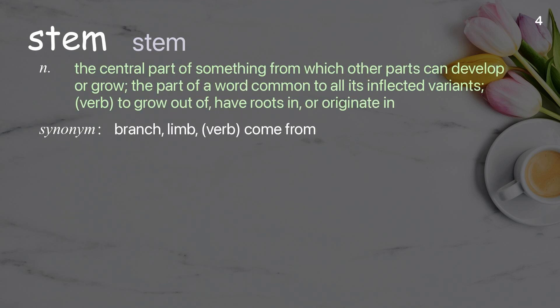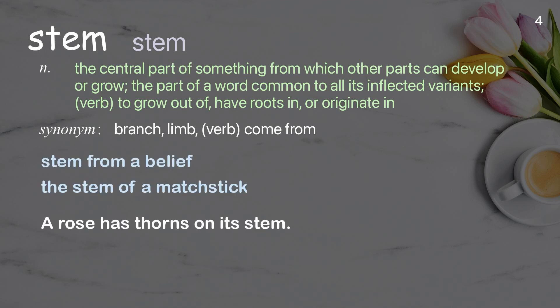Stem: the central part of something from which other parts can develop or grow; the part of a word common to all its inflected variants. Verb: to grow out of, have roots in, or originate in. Examples: stem from a belief, the stem of a matchstick. A rose has thorns on its stem.